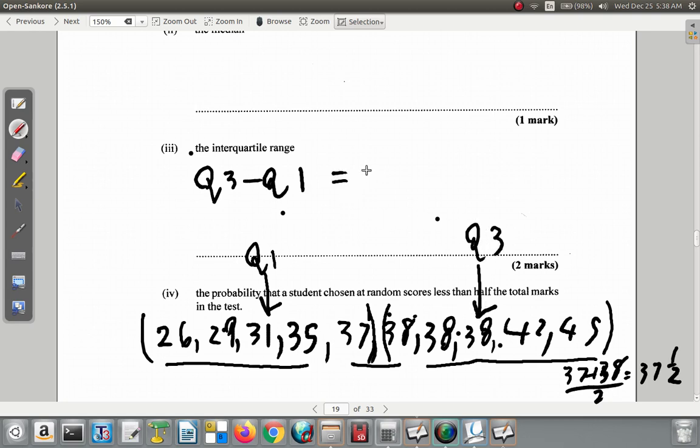So in this case, it would be 38 minus 31. So in this case you have 7 as the interquartile range.